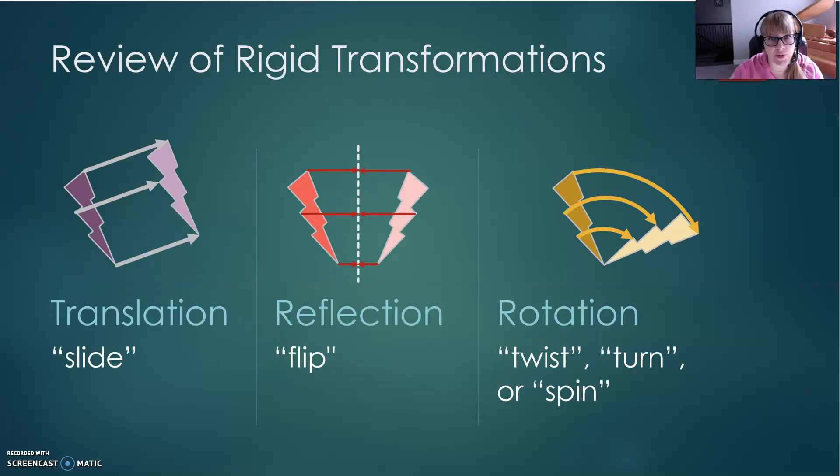First, a review of our rigid transformations. We start with translation, also known as a slide. Then we have reflection, which is a flip over a reflecting line. It creates a mirror image. Finally, we have rotation, also known as a twist, a spin, or a turn. Rotations happen around a point.